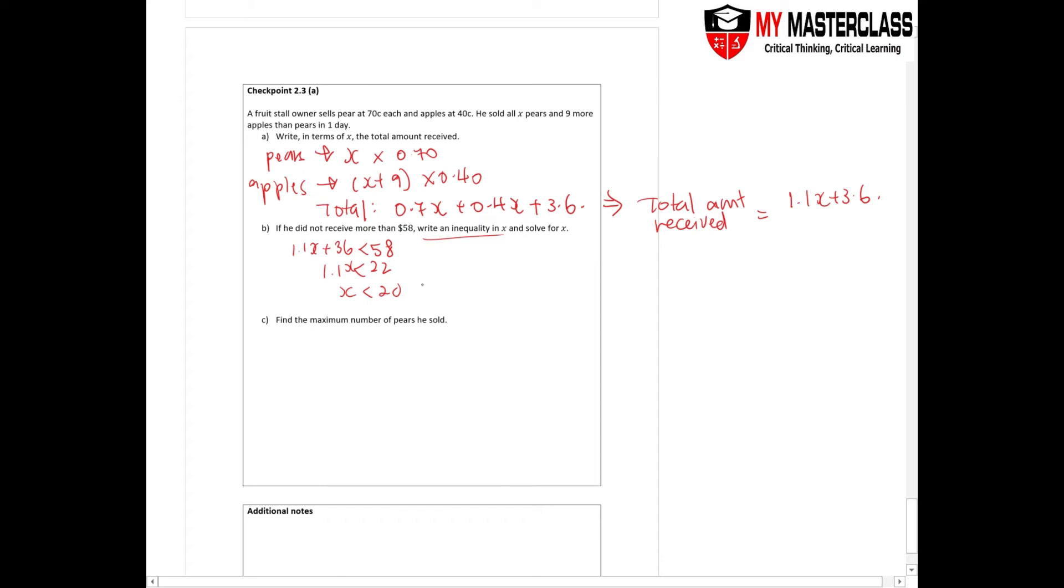Find the maximum number of pairs that he sold. So can X be 20? X cannot be 20 because it's smaller than 20. So what is the maximum number? The maximum number of pairs you are looking at should be 19.